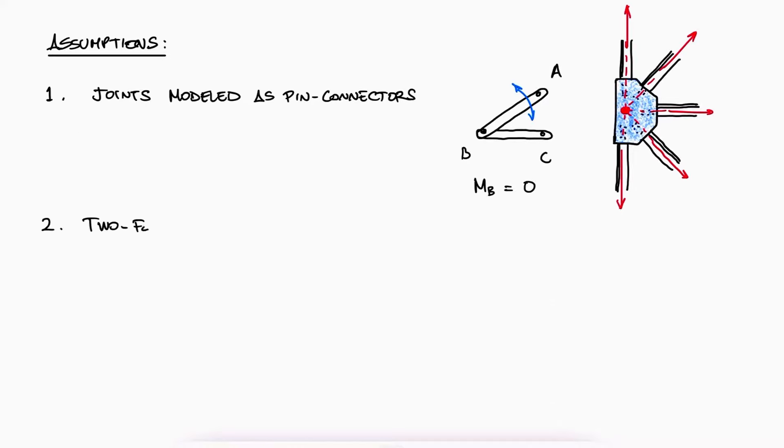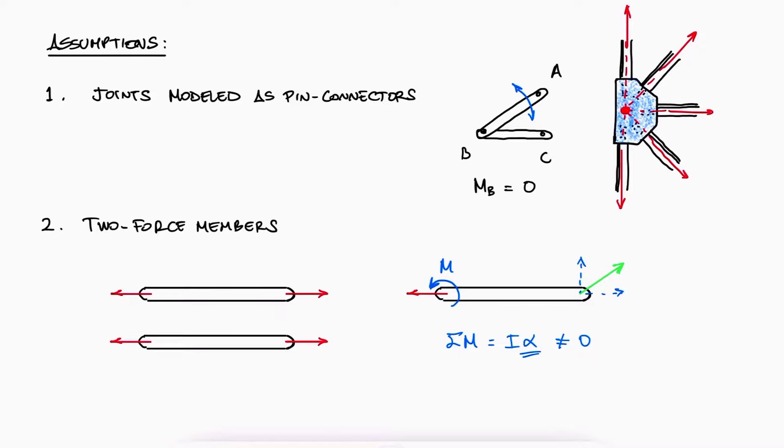Since there is not a reaction moment at the joints, the second assumption is that trusses are made entirely of two force members. If the forces were not axial, then a moment would be created and the member would be accelerating angularly.